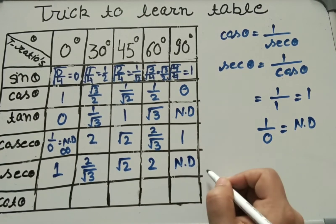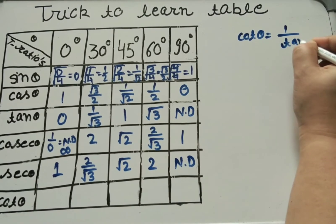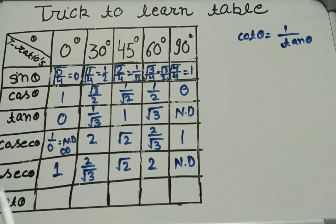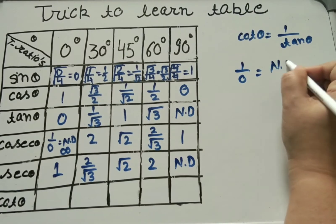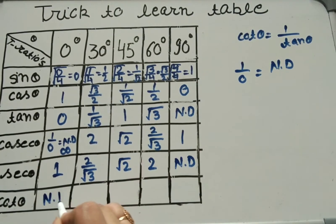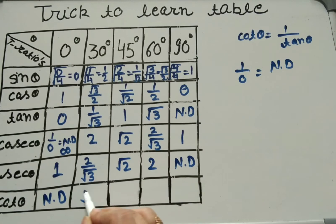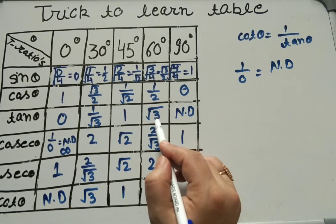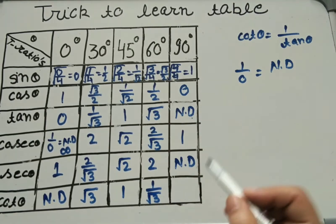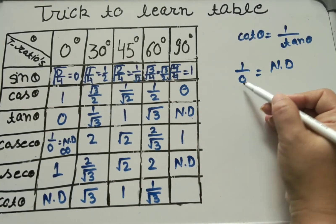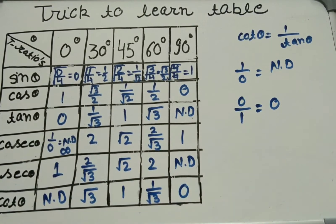Next is cot theta. Cot theta is the reciprocal of tan theta, so cot = 1/tan. For cot 0°: 1/0 is not defined. For 30°: reciprocal of 1/√3 is √3. For 45°: reciprocal of 1 is 1. For 60°: reciprocal of √3 is 1/√3. For 90°: reciprocal of not defined (1/0) — that gives 0/1 = 0.